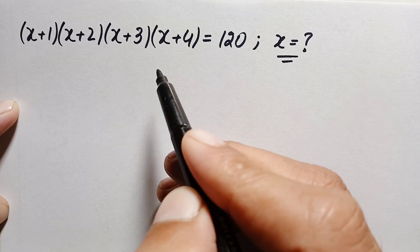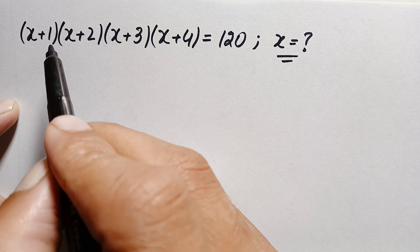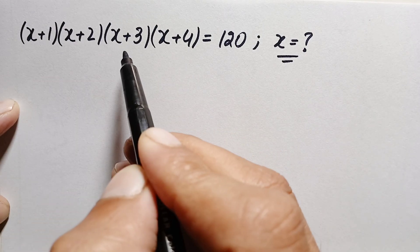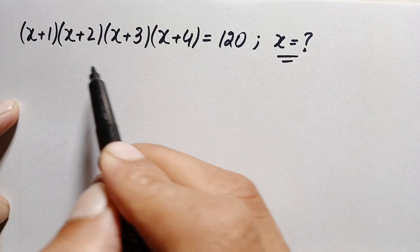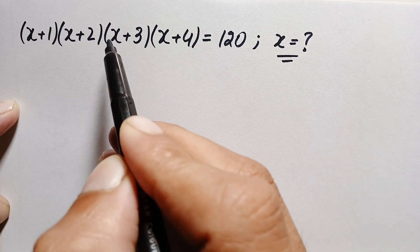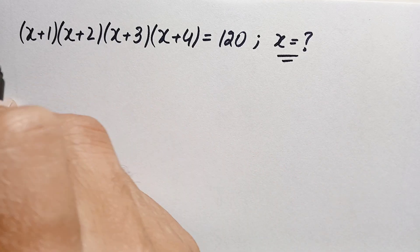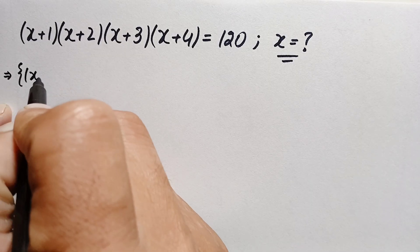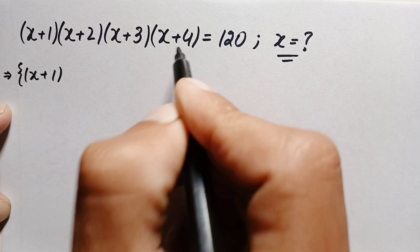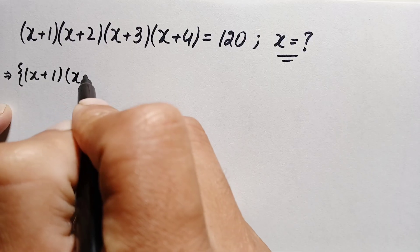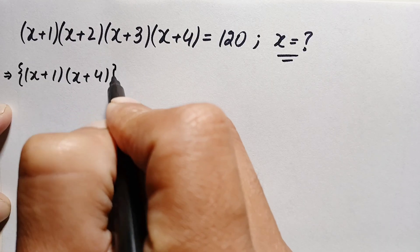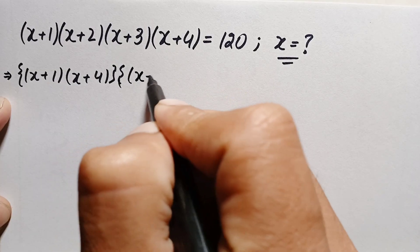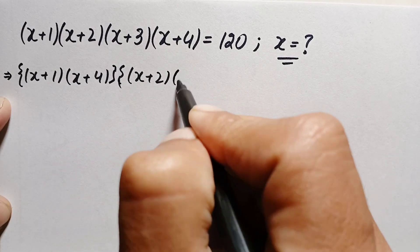Let's start our solution. First, on the left-hand side, note that 1+4=5 and 2+3=5. So we will combine these two pairs of expressions: (x+1)(x+4) times (x+2)(x+3).